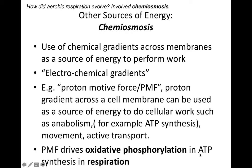To understand key events in aerobic respiration, we need to understand chemiosmosis. ATP is not the only source of energy for cellular work — cells can use chemical concentration gradients across their membranes as a source of energy. In aerobic respiration, we're going to have such a chemical gradient formed across a membrane. In fact, it will be an electrochemical gradient, specifically a proton gradient across a membrane. We refer to this potential source of energy as a proton motive force, or PMF, which represents a potential source of energy that can drive cellular work.